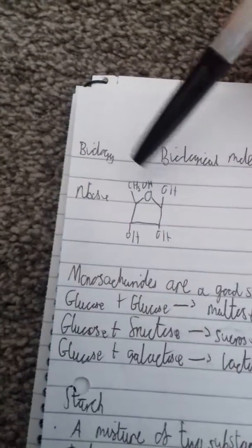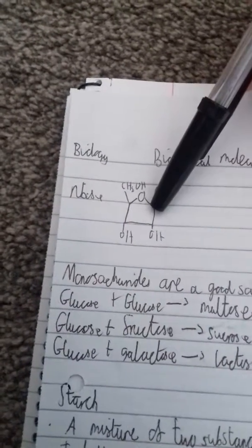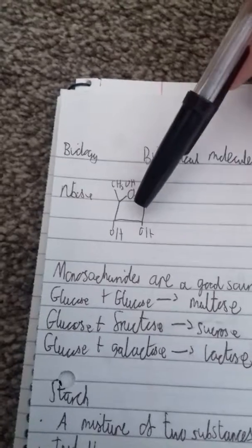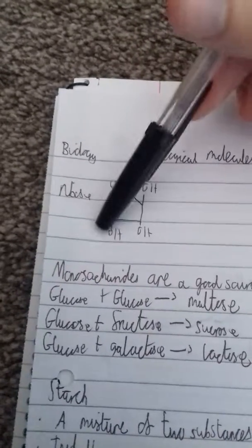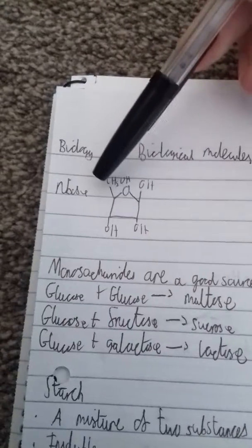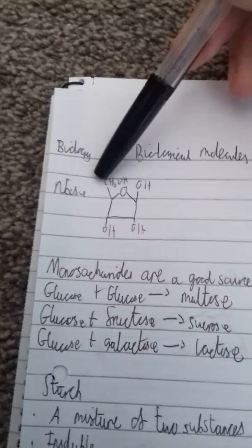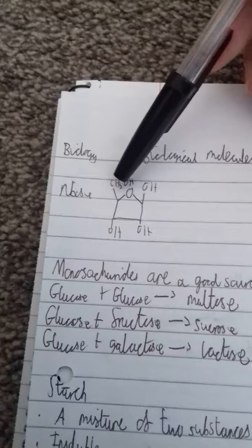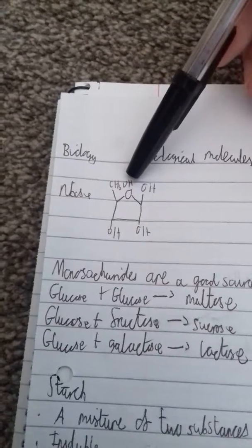Ribose is arranged in a ring-like structure. You've got carbon 1 with the OH on top, carbon 2 and carbon 3 both with the OH at the bottom, carbon 4 here, and then carbon 5 off to the side with two hydrogens and an alcohol group.